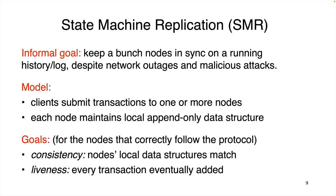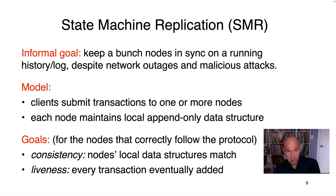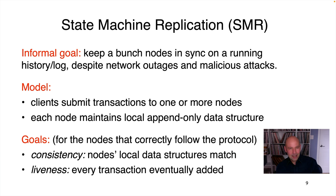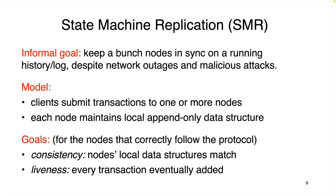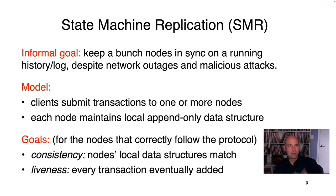The answer depends in an interesting way on different assumptions we might make. Really, the question is: under what sets of assumptions is it possible to solve consensus — to have an SMR protocol guaranteeing both consistency and liveness? That's the SMR problem, and it's quite relevant to blockchains. For example, Bitcoin and Ethereum can be viewed as SMR protocols that keep a bunch of nodes in sync on an ordered sequence of transactions. The SMR problem was actually defined way back in the 1980s, well before blockchains were a gleam in anyone's eyes. Bitcoin was launched in 2009, Ethereum in 2015.